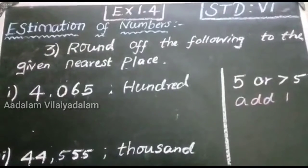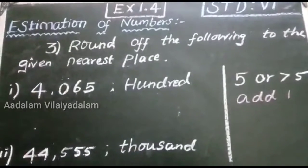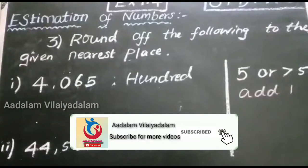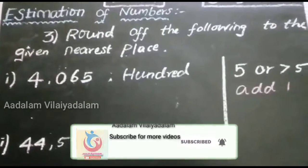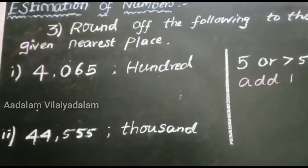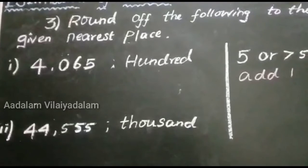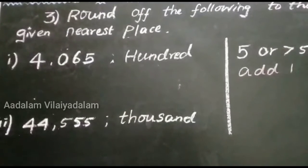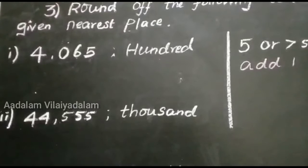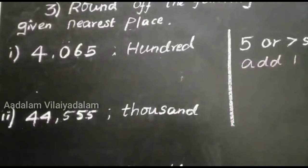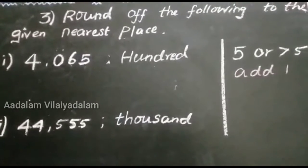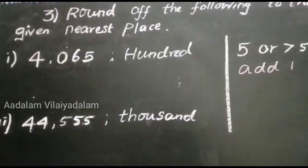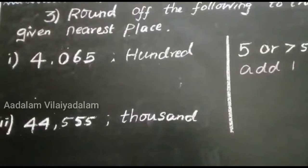Today, we are going to study about the estimation of numbers. The estimation of a number is a reasonable guess of the actual value. Estimation means approximating a quantity to the accuracy required. Rounding off is one way to find an estimation that is quite convenient. It gives us the closest suitable number according to the given place value.